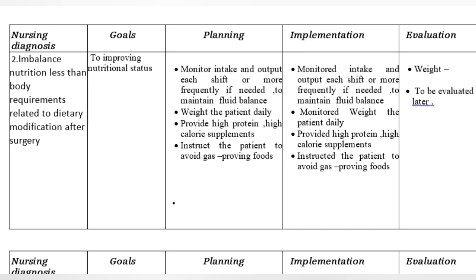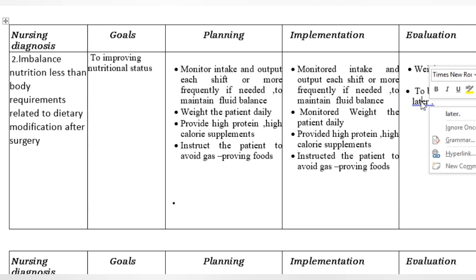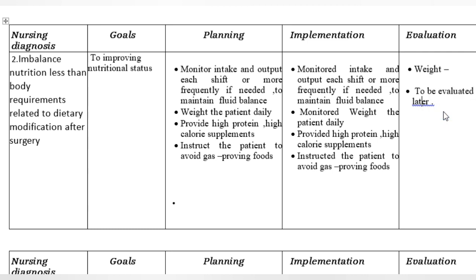Nursing diagnosis 2: Imbalanced nutrition less than body requirements related to dietary modification after surgery. Goal: To improve nutritional status. Planning: Monitor intake and output each shift, or more frequently if needed, to maintain fluid balance. Weigh the patient daily. Provide high-protein, high-calorie supplements. Instruct the patient to avoid gas-producing foods.